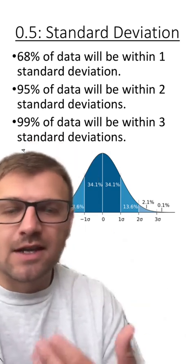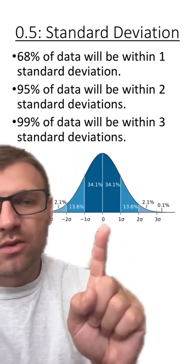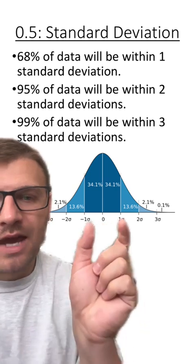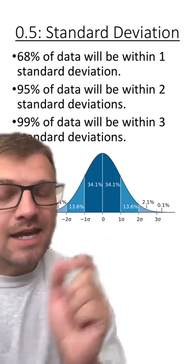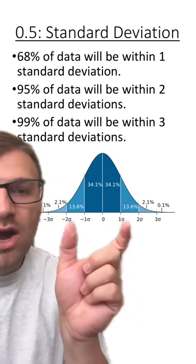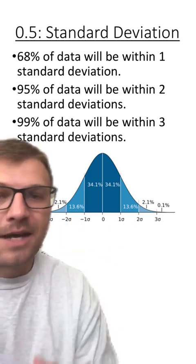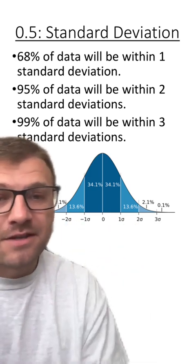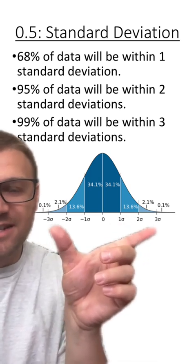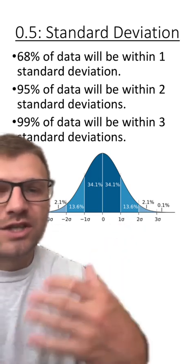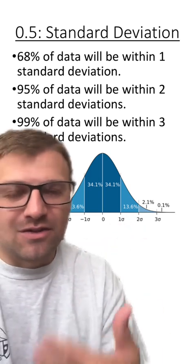So just as a wrap-up: we have our average or the mean, we have our first standard deviation that encapsulates 68% of the data, our second standard deviation which encapsulates 95% of the data, and our third standard deviation which encloses 99% of all the data.